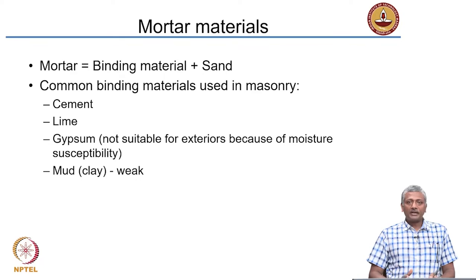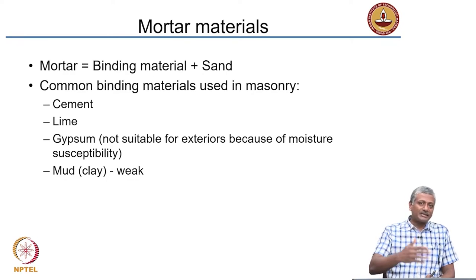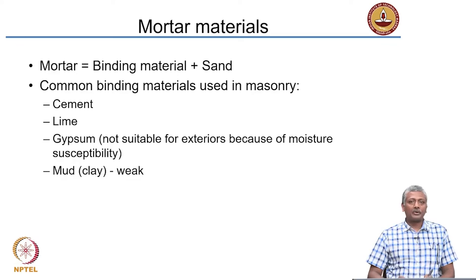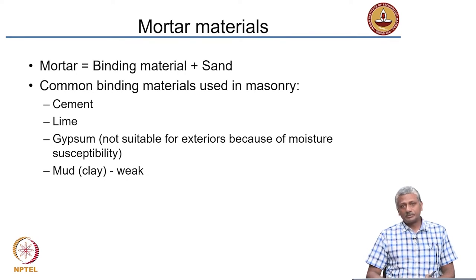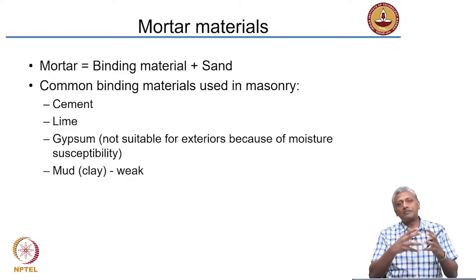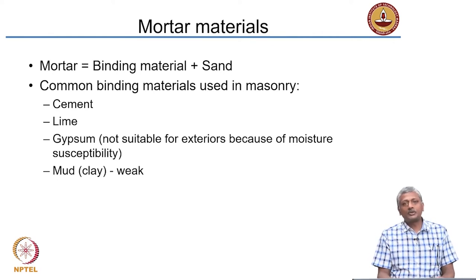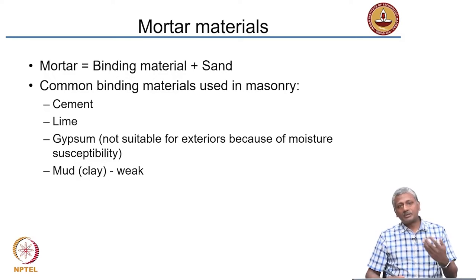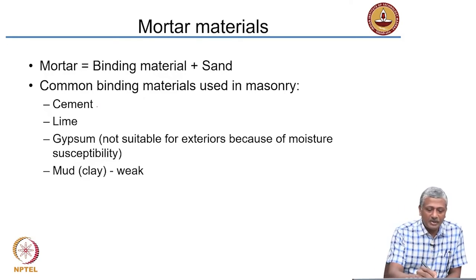We have talked about brick and stone, but not yet about masonry — that will come a little later. First I want to touch upon the mortar materials typically used. Mortar is nothing but a combination of a binding material and sand. A material that glues the sand particles together is the binding material. Even glue mixed with sand would be a mortar, but in most cases for construction, the mortar binding material typically consists of cement, mixed with water, or you have lime, again mixed with water.